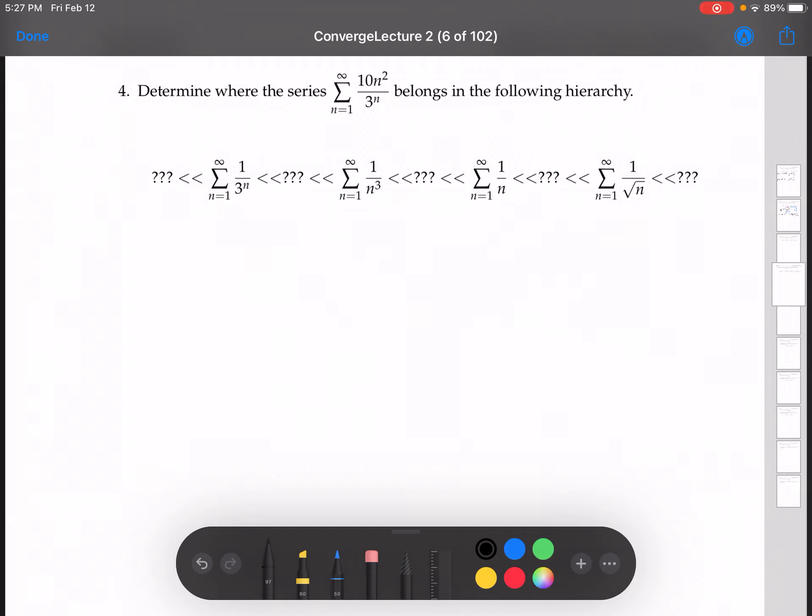So with this one, notice that we're dealing with 10n squared over 3 to the n. And over here we have 1 over 3 to the n, so that tells me this is a good place to start. Let's decide: is this thing smaller or bigger than this guy right here?